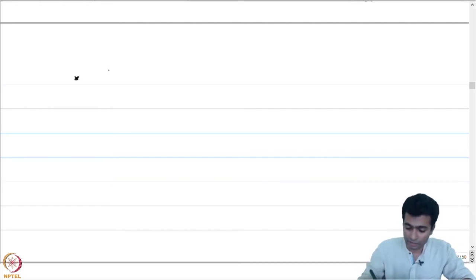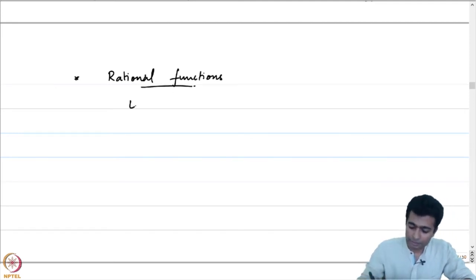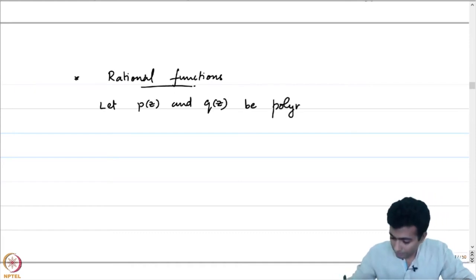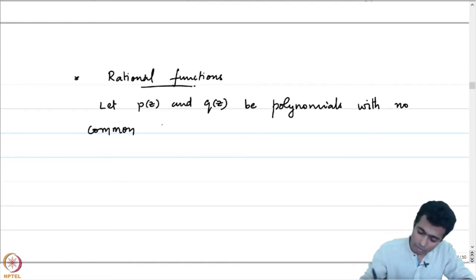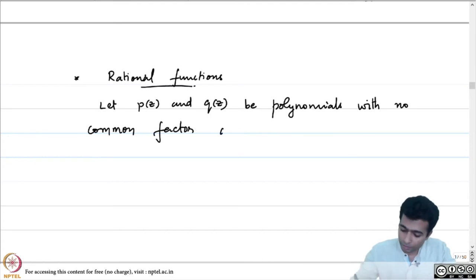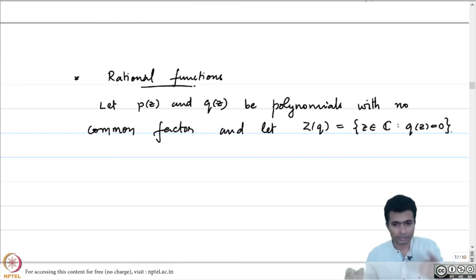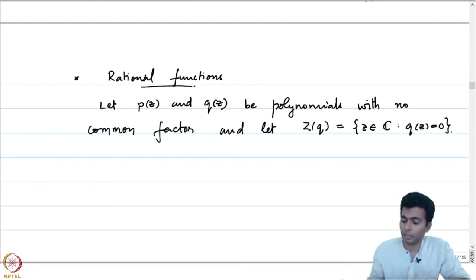Another example would be rational functions. Let p of z and q of z be polynomials which do not have a common factor — in particular, no common zeros. Let Z(q) be the set of all those points in the complex plane such that q of z equals 0. Remember that q of z is a polynomial of degree d, so the number of points where q vanishes, counting multiplicity, will be less than or equal to d; there cannot be more than d points in Z(q).